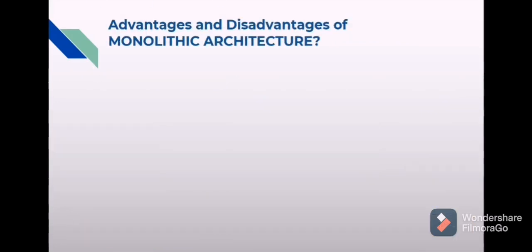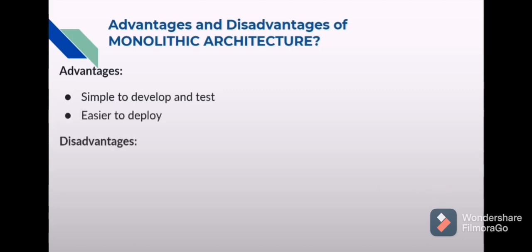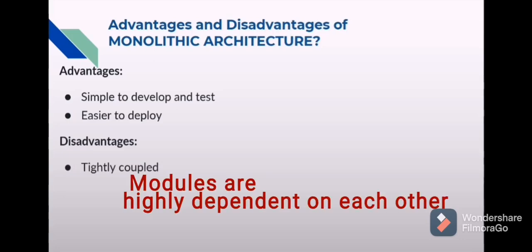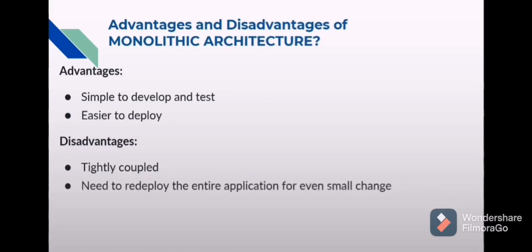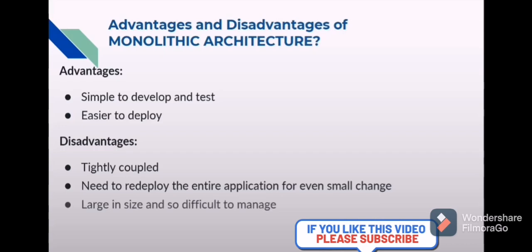What are the advantages and disadvantages of monolithic architecture? Advantages: simple to develop and test — since monolithic architecture consists of a single code base, it is easy to develop, test, and deploy. Disadvantages: tightly coupled, meaning we cannot change one module without affecting another. Need to redeploy the entire application even for a small change. Since they are tightly coupled, it is very difficult for bug fixes. Large in size and so difficult to manage. Deployment time is more.